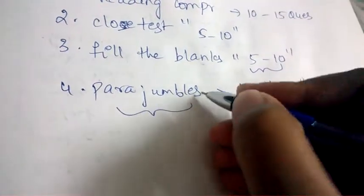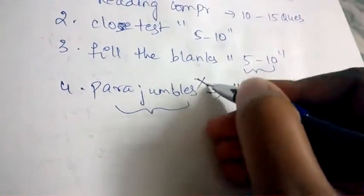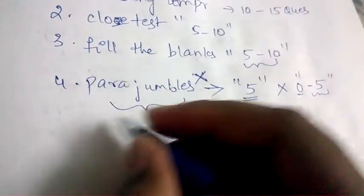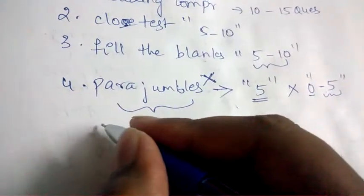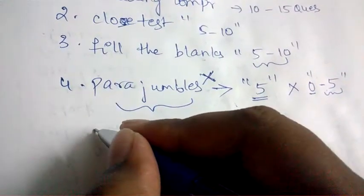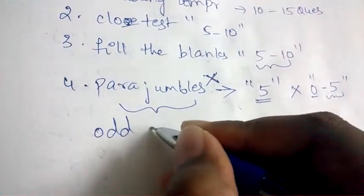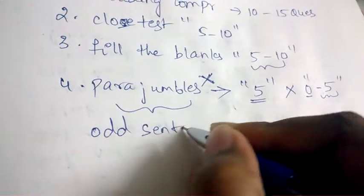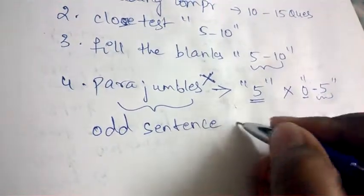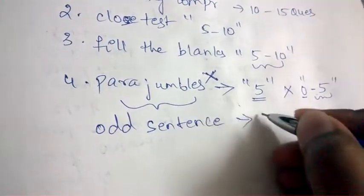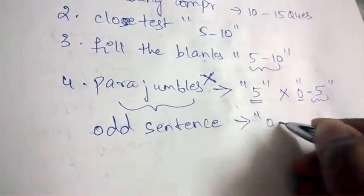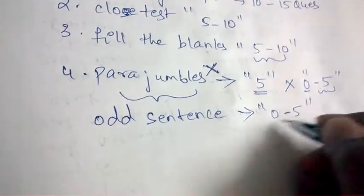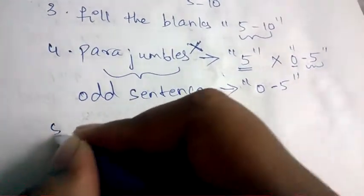Sometimes Para Jumbles will not be asked in the exam. In that case, instead of Para Jumbles, they'll ask you to select the odd sentence. The questions from this topic also range from 0 to 5.